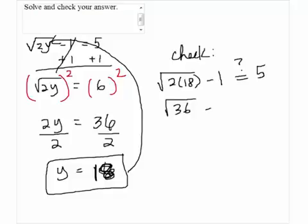Square root of 2 times 18, which is 36 minus 1, which will give us 6 minus 1 equals 5. So it checks.